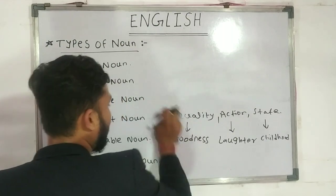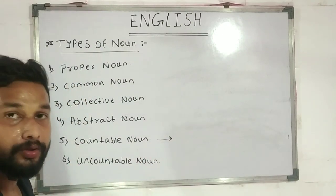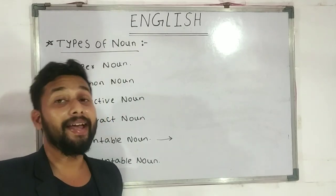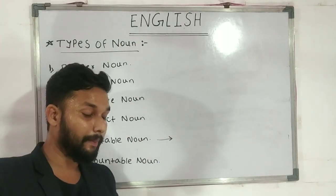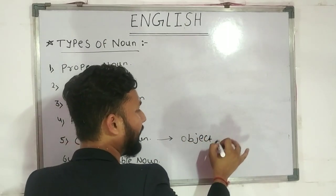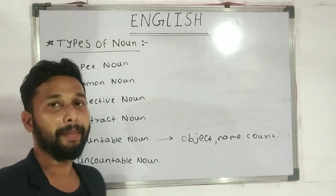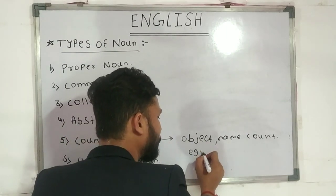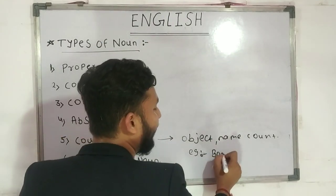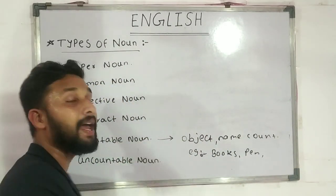The next one is a very simple type of noun — it is countable noun. A countable noun is a noun that we can count. It is the name of any objects or people that we can count. These are objects we can count. We call these countable nouns.